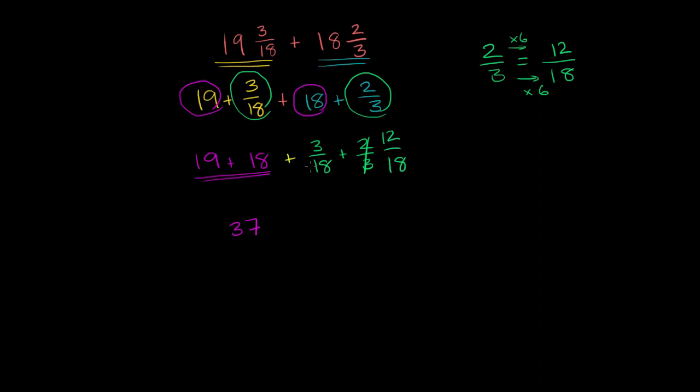And now I can add these two things together. So I have 37 plus something over 18. 3 plus 12 is 15, plus 15 over 18.